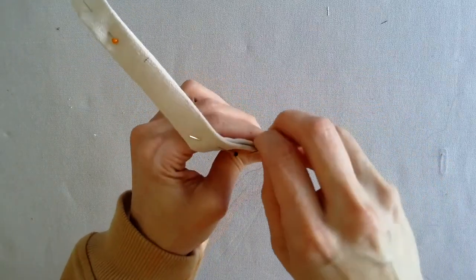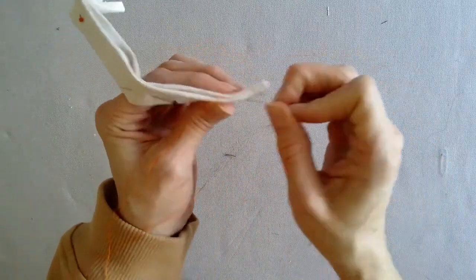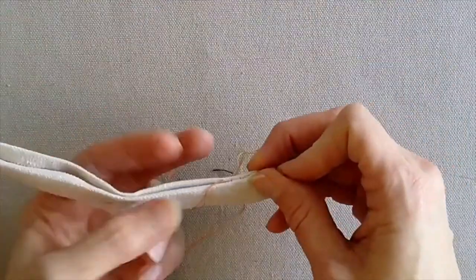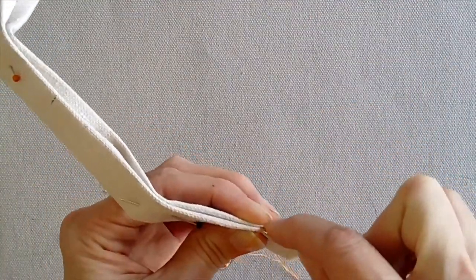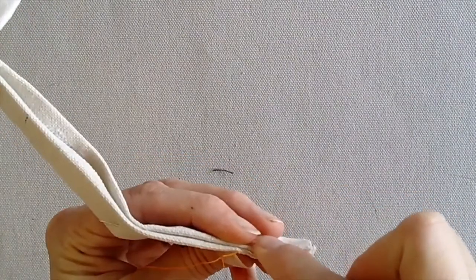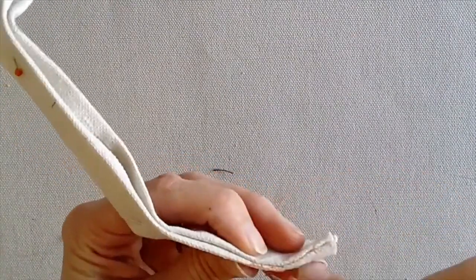After several blind stitches are complete, pull the thread to tighten the stitch. Begin stitching again, pulling the thread every several stitches to make sure the seam is tight.